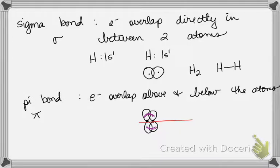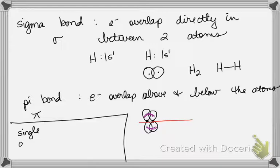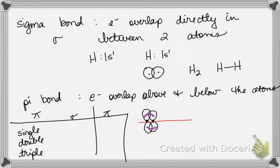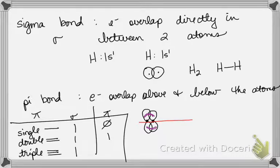In summary: a single bond is a sigma bond. In a double bond, one is sigma and one is pi. In a triple bond, one is sigma and two are pi. You would typically look at the molecule as a whole and count all the single bonds, all the double bonds, and all the triple bonds.